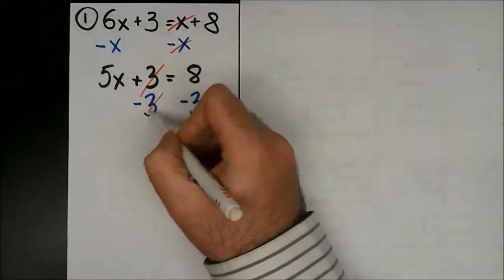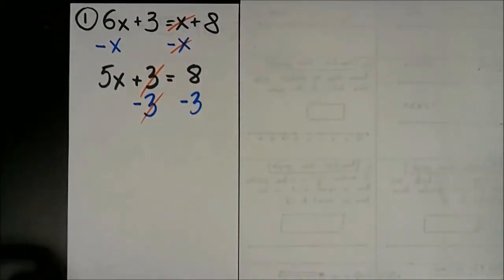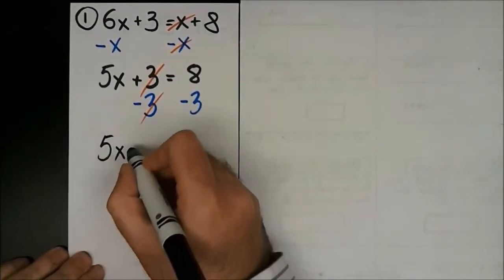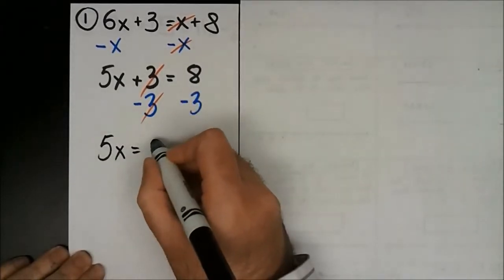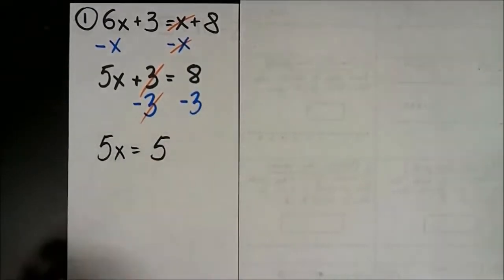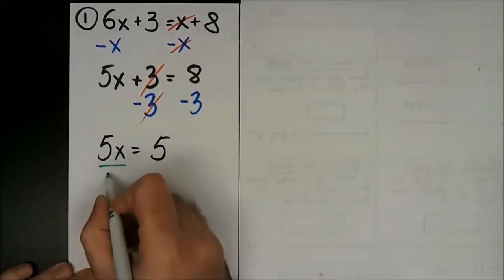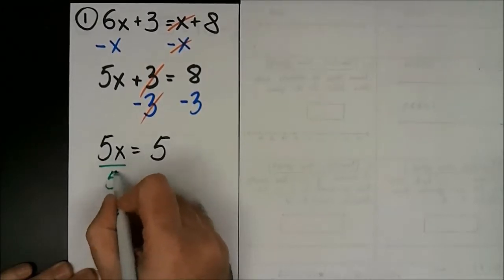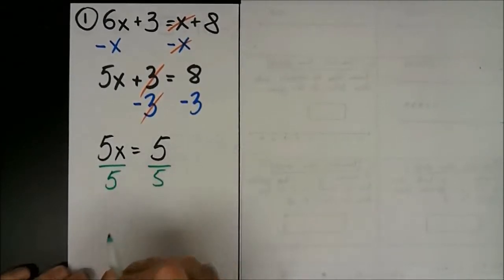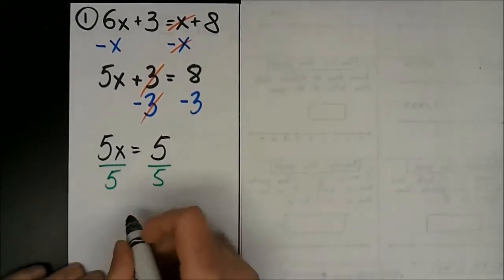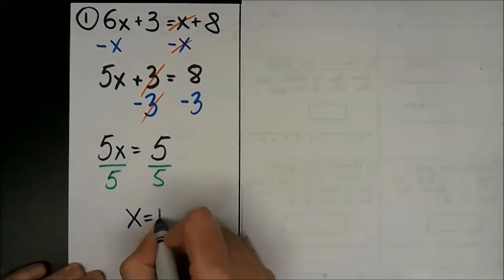These cancel each other out by design, which leaves me with 5x equals 8 minus 3, which is 5. The last step — the x is being multiplied by 5, so I divide by 5 on both sides, and I get x equals 1 because 5 divided by 5 is 1.